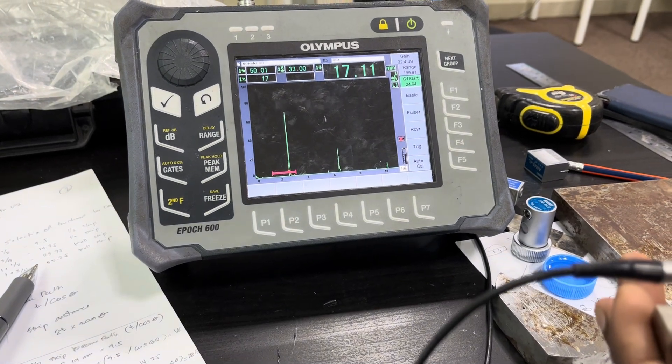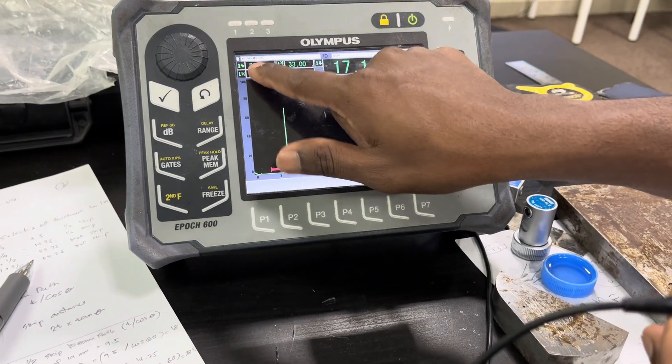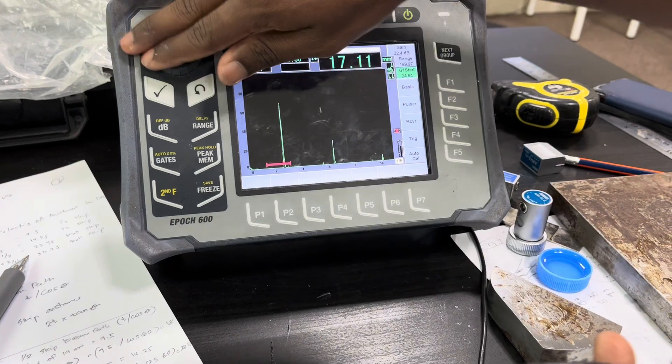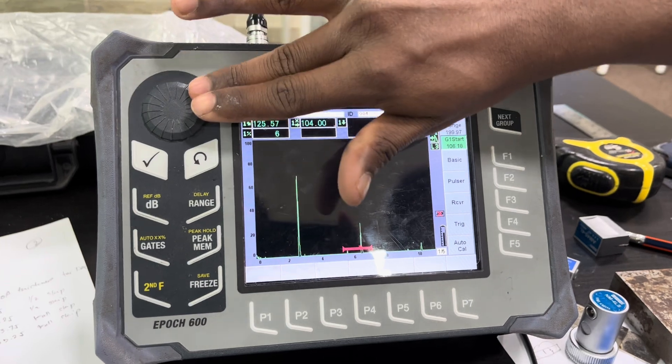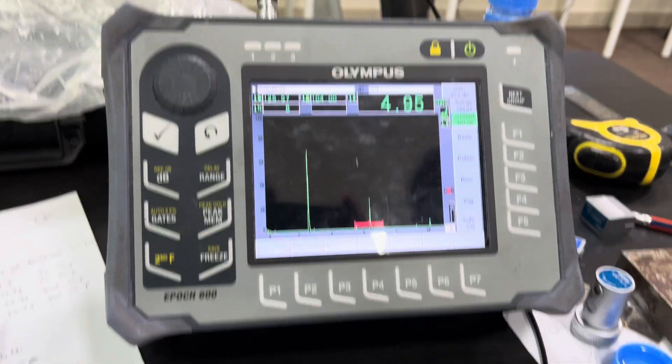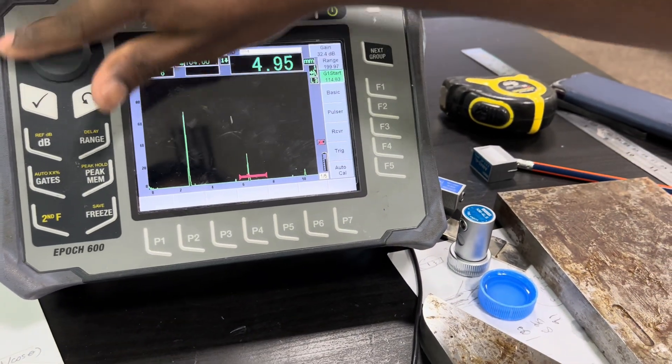Exactly, it's at 50—this is the range, this is the beam path. The second back wall echo comes at 125. See, this one also came at 125, and it should come at 200.